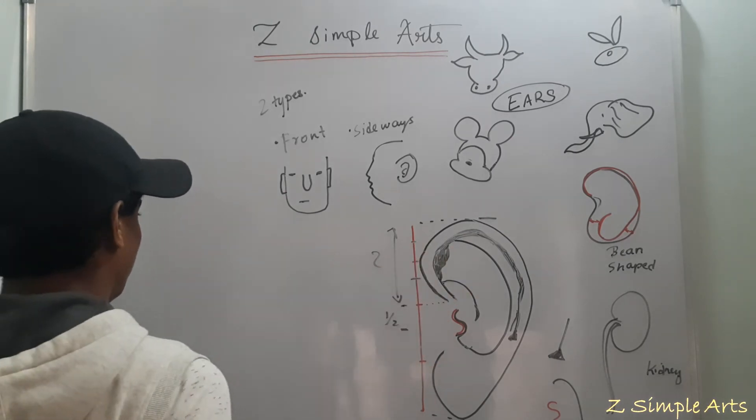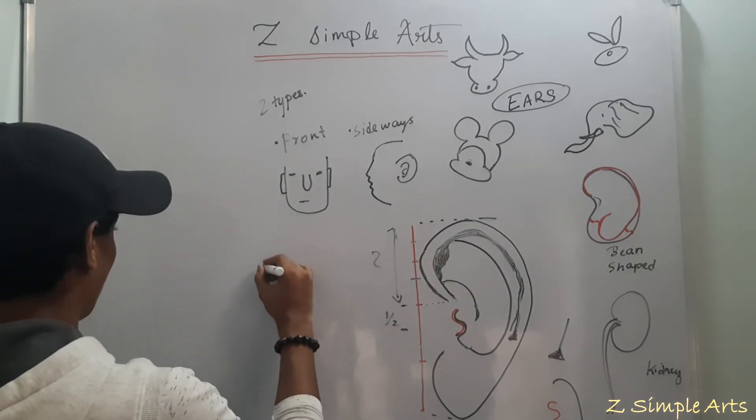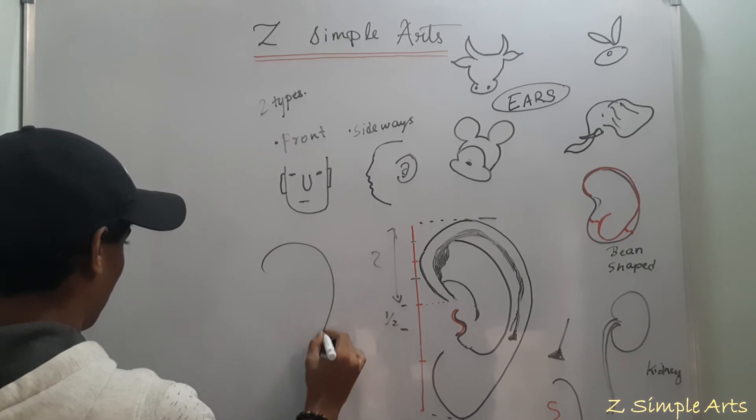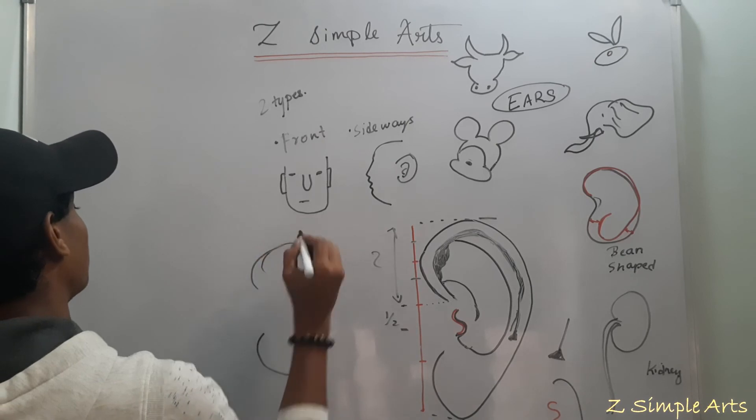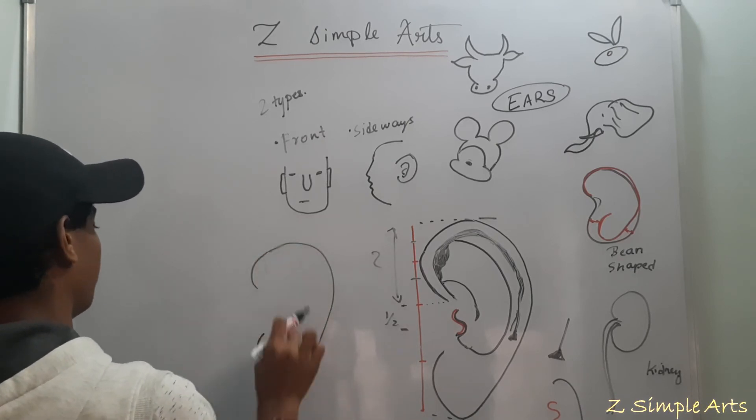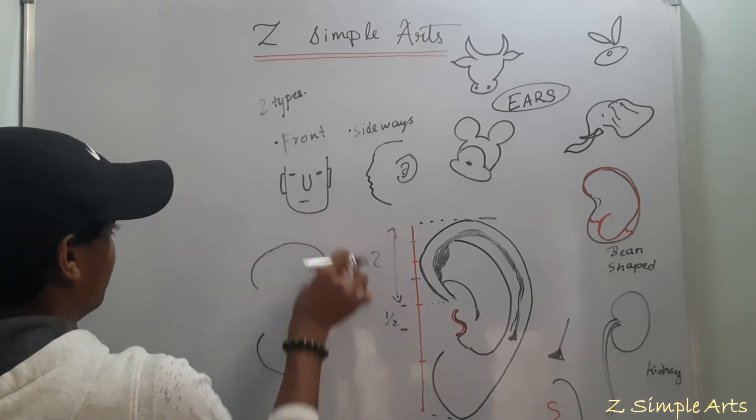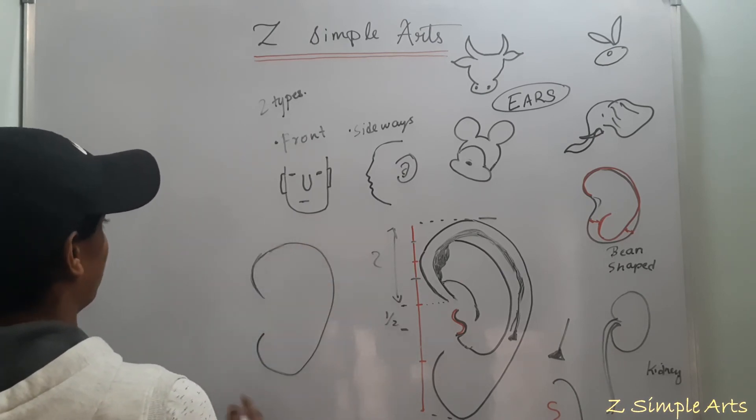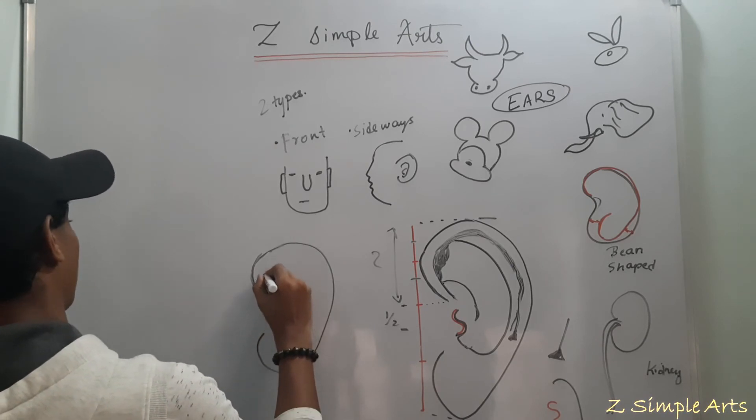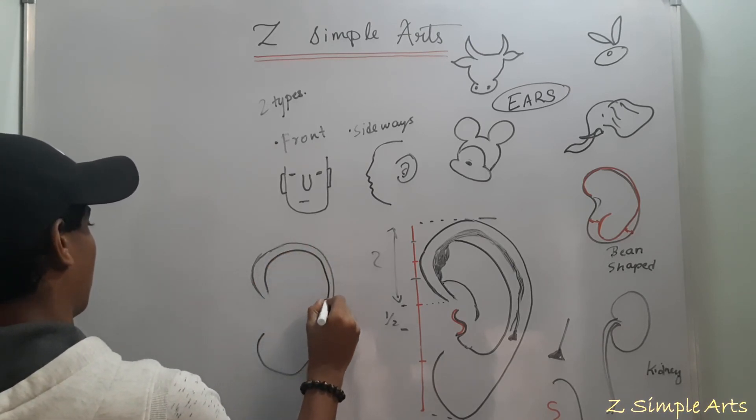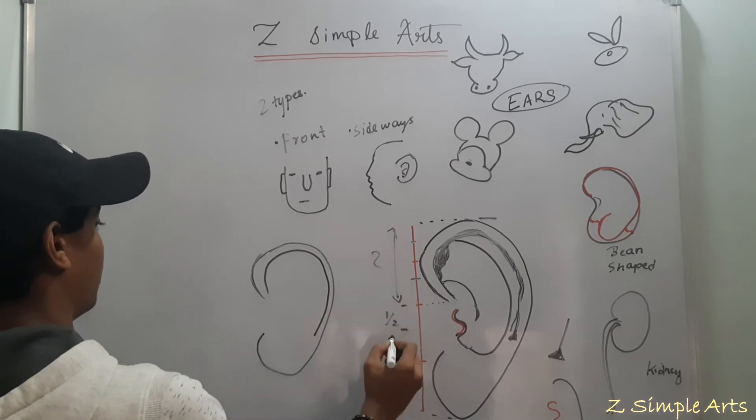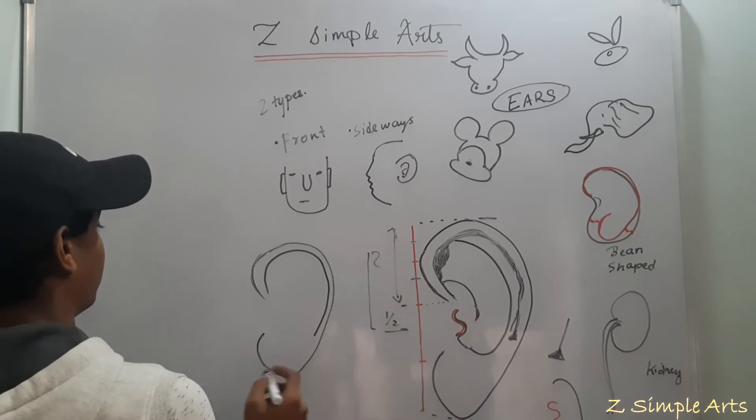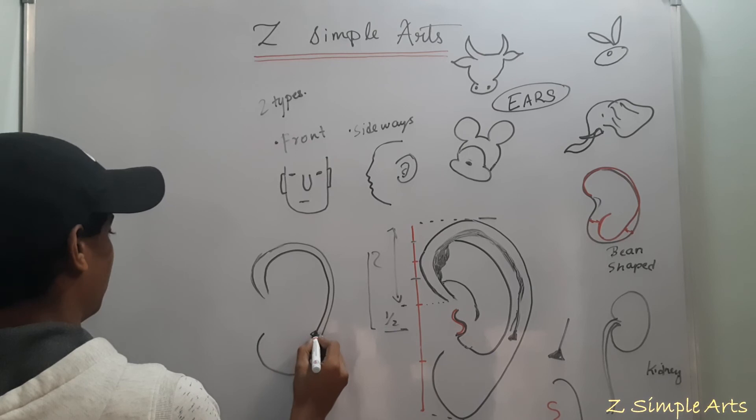So I'll just do it here. A bean shape. The anterior part is little broad compared to this posterior part. Extend. Next step, draw a parallel line. Tilt. Two and half. Triangle head.